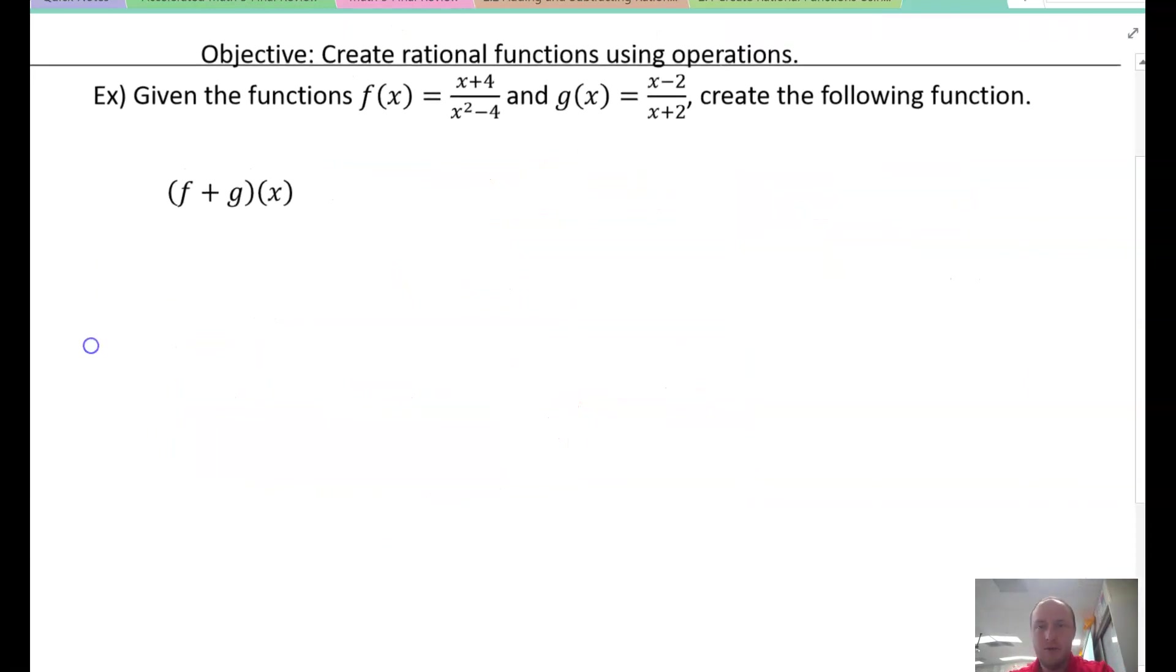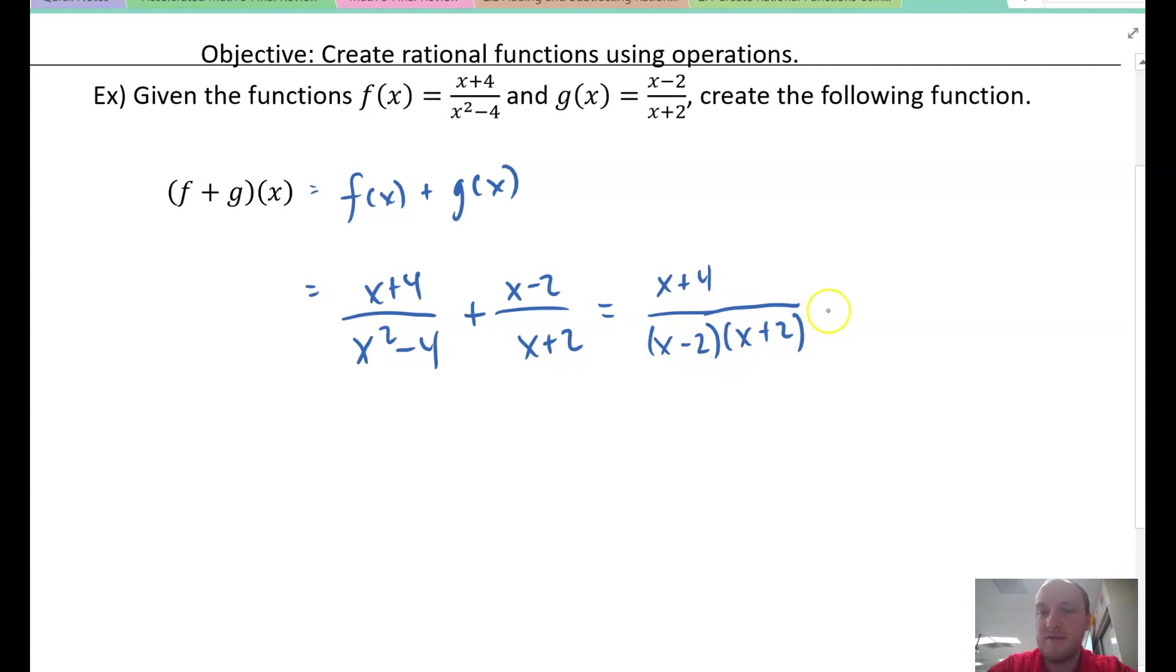Here is example 2, and they want f plus g of x. What do you think they're going to want us to do? Add them. I have my two functions: x plus 4 over x squared minus 4 plus x minus 2 over x plus 2. We'll factor this: x minus 2, x plus 2. If you see that right away and you want to do that, feel free to jump right into the factoring. It will save you a line.